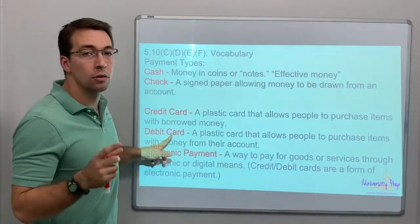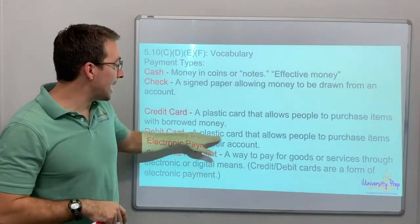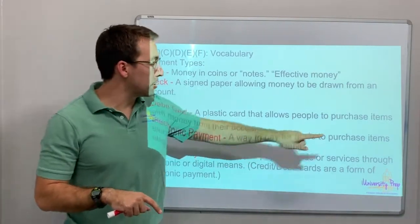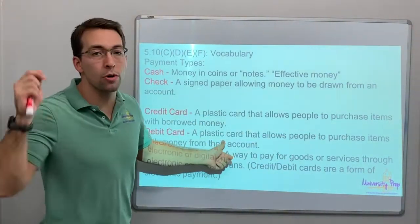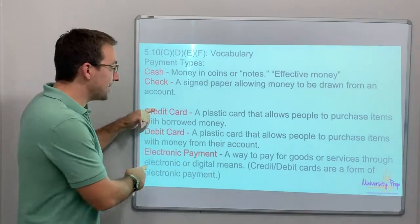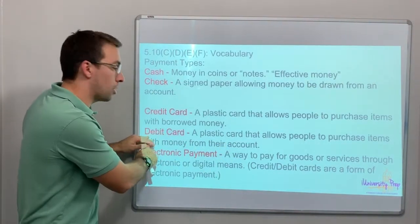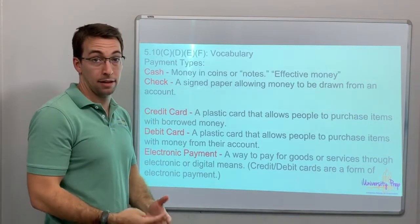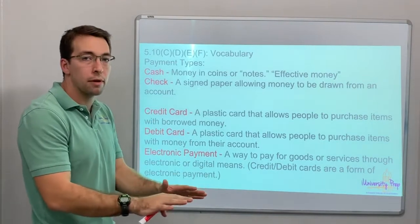A debit card is cool. It's different than a credit card because it's a plastic card that allows people to purchase items with money from their own account. Credit is borrowed money. And a debit card is money that you have in the bank. You have it. It's yours already. You're not borrowing money.